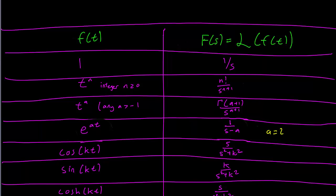So e to the 2t corresponds to 1 over s minus 2.